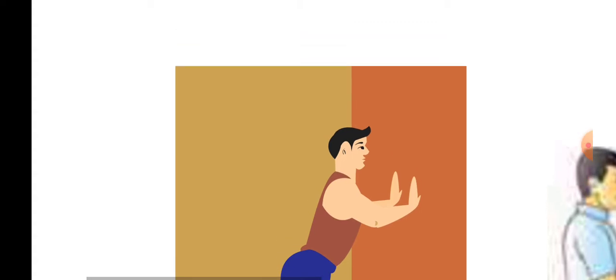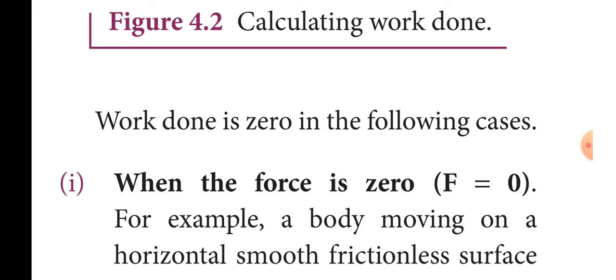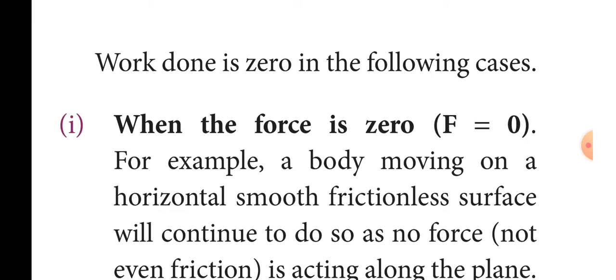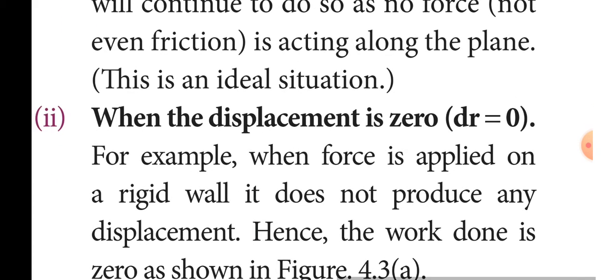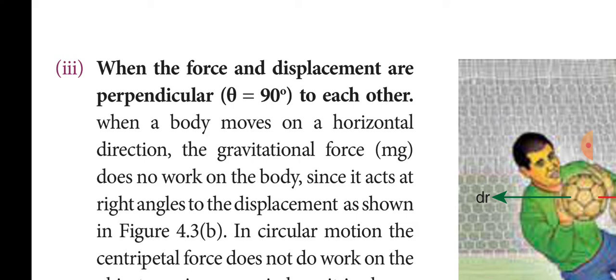In some cases, work done is zero. The first case is when the force is zero — there is no work done. The second case is when the displacement is zero; dr becomes zero, so there is no work done. The third case is when the force and the displacement are perpendicular to each other. For example, when a body moves in a horizontal direction, the gravitational force does no work on the body, so the work done is zero.